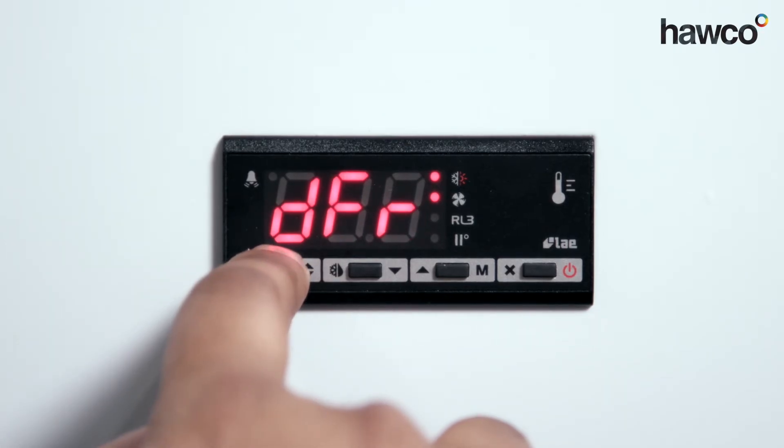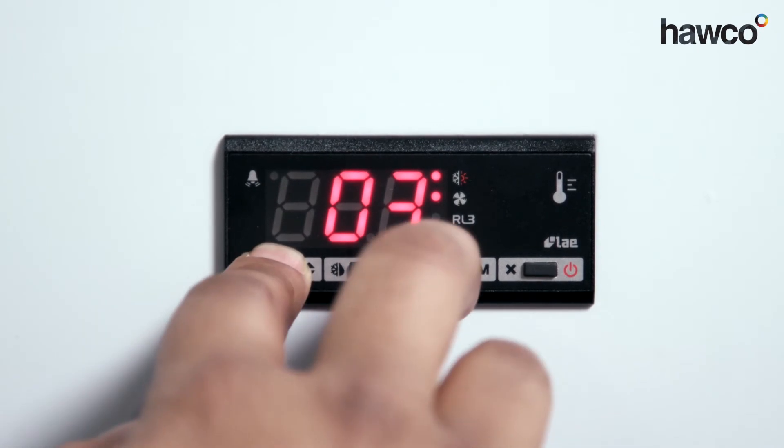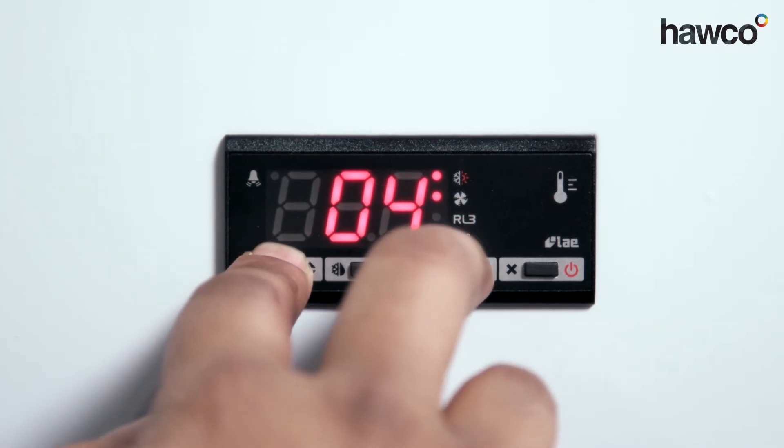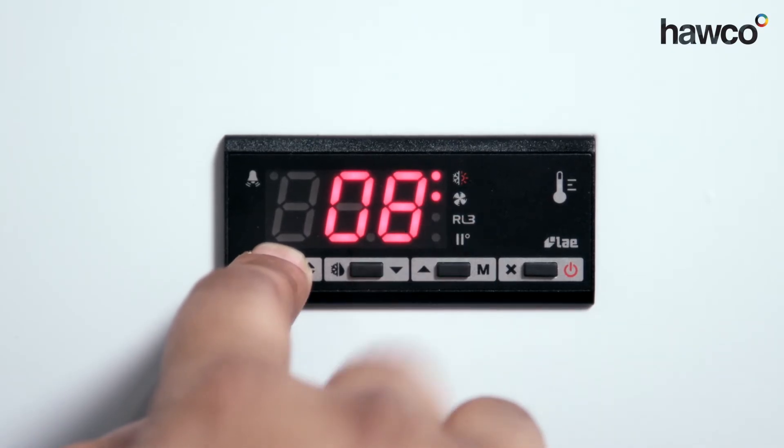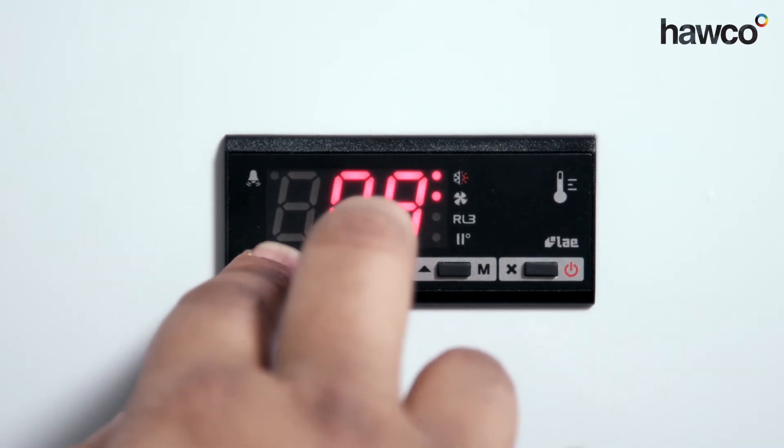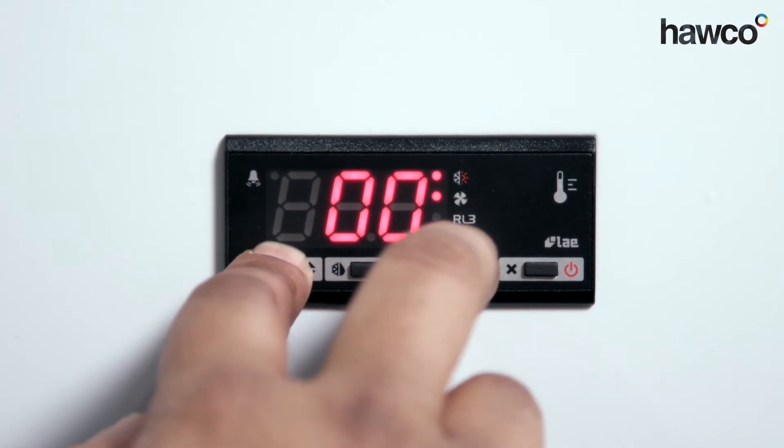DFR is defrost frequency in hours. This one's set to three, so it will defrost every three hours. You can increase it up to six or even eight if you wish. If you want to completely disable it, you can set it to zero. In this instance, I'll keep it at six.